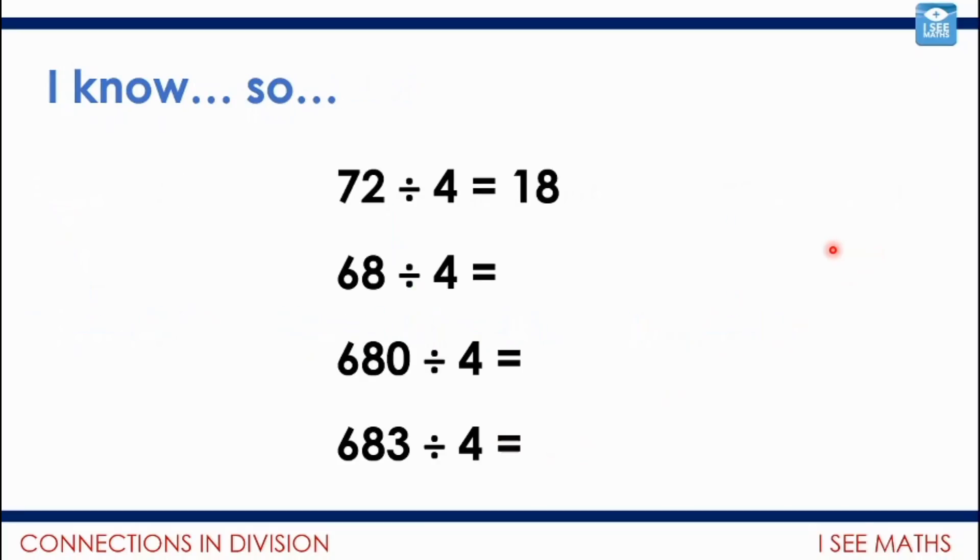This is the last part of the video that we're just going to have a look at. This technique, I know and so. So using our understanding of division where I'm thinking, how many 4s in 72? There's 18. And how I can use that to work out related questions. So let's have a little look here. For the first one, 68 divided by 4. Well, of course, it's 1 less 4. So it will be 17. And that's how they link.